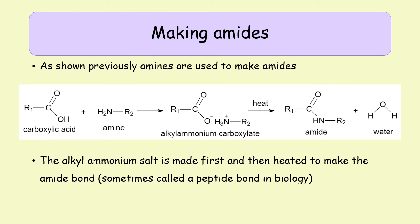Amines can also be used to make amides. When amines react with carboxylic acids, they first form alkyl ammonium salts, which are then heated to form the amide bond. The amide bond is a C double-bond O followed by a bond to an NH group. In chemistry this is called an amide bond; in biology it is called a peptide bond, or a peptide link when found in a protein.